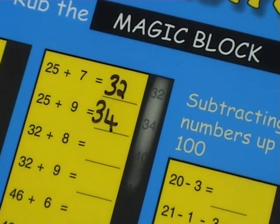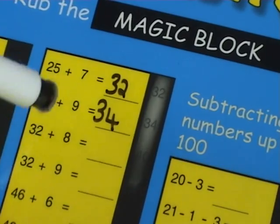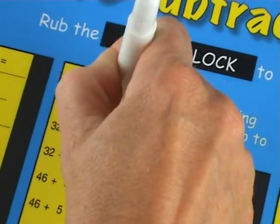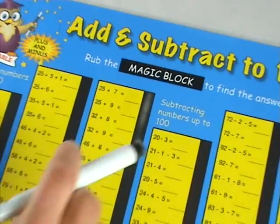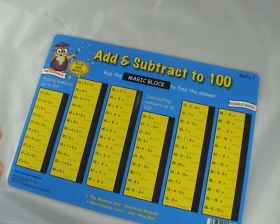So the mats are totally reusable. The children rub out their answers using either a tissue, or they can use the felt ends of our pens.